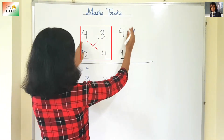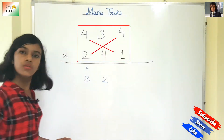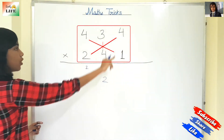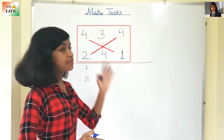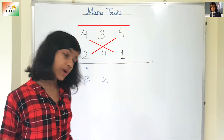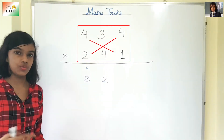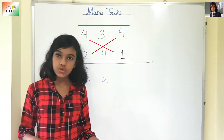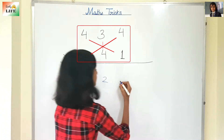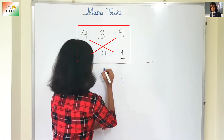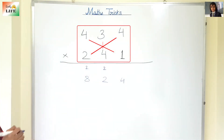Now the third block: 4×1 is 4, and 4×2 is 8. So 8 plus 4 is 12. Then 4×3 is 12. So 12 plus 12 is 24. We are going to write 4 and carry 2.